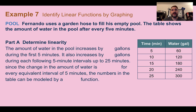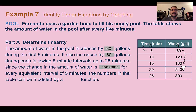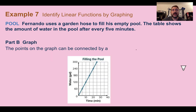Example seven: identify linear functions by graphing. Fernando uses a garden hose to fill his empty pool, and the table shows the amount of water every five minutes. The pool started empty, so it went up 60 gallons in the first five minutes, and it also increases by 60 gallons each five-minute interval after that — the change in water is constant. This is a linear function. If we graph these points, they can be connected by a straight line, confirming it is linear.